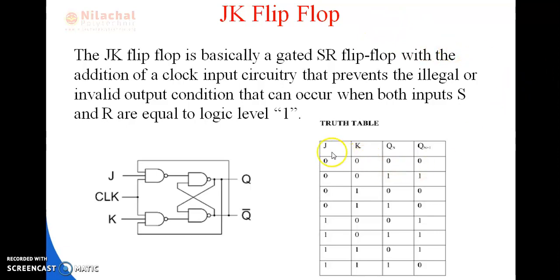This is the truth table of JK flip-flop. In this JK flip-flop, when both the inputs are 0, the outputs are no change — that is, the output remains either 0 or 1. The outputs are Qn and Qn bar.